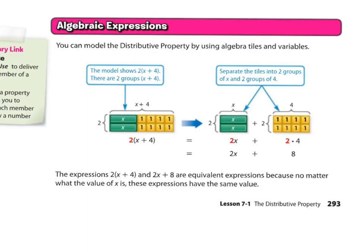Now let's practice using the distributive property algebraically. You can model it using algebra tiles and variables. For example, we have 2 times (x + 4). Two x's and two times four is eight singles — so this equals 2x plus 8. Inside the bracket, I cannot add these two terms because they are unlike terms; I cannot add 4 plus x. I can only multiply, so I go ahead and multiply: 2 times x and 2 times 4.